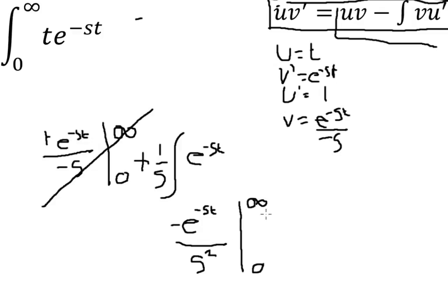And then at infinity this will equal 0. So 0 minus then whatever this is at 0. So that's minus 1 over s squared. So 1 over minus 1 over s squared, which is equal to 1 over s squared.